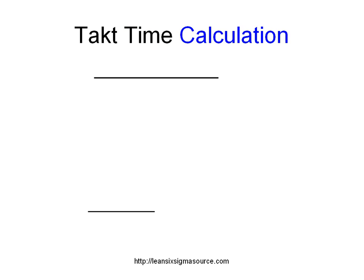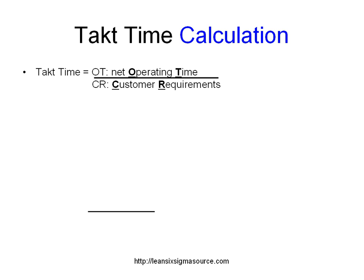So let's do an example. Our formula is Takt time equals net operating time divided by customer requirements. It helps to remember OT over CR.